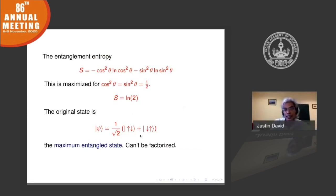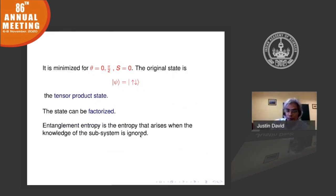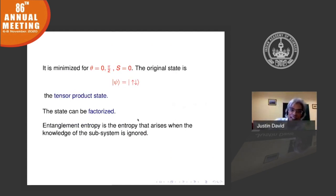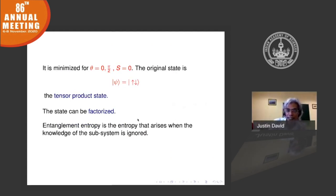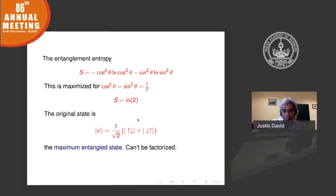The entropy is minimized when the state is just |up⟩|down⟩ — a tensor product of the two spins that can be factorized. So, from this simple example we realize that entanglement entropy arises when knowledge of a subsystem is ignored — you trace over B and lose information about it. That is where the entropy comes from.